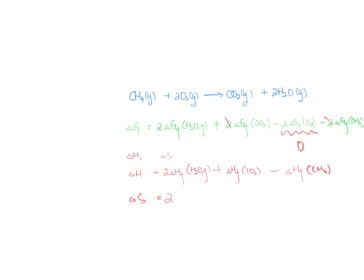2 times the formation entropy of the water vapor, plus the formation entropy of the carbon dioxide, minus the formation entropy of the methane. And once you have the delta S and delta H, delta G should be equal to delta H minus T times delta S.